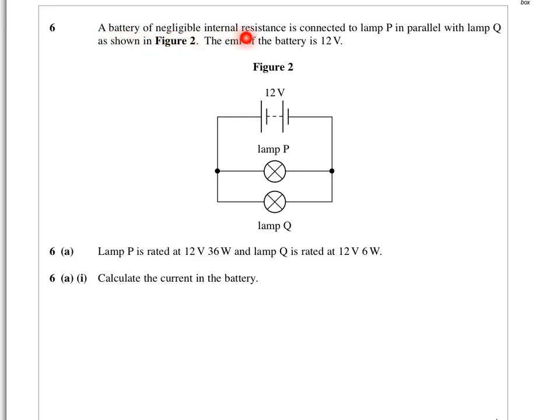So we've got a battery with negligible internal resistance connected to two lamps, lamp P and lamp Q, and they're in parallel with each other. The EMF of the battery is 12 volts. Before we look at the question, you should realize that with a 12 volt battery and two components in parallel, we've got 12 volts across each component since they have the same voltage as the power supply.